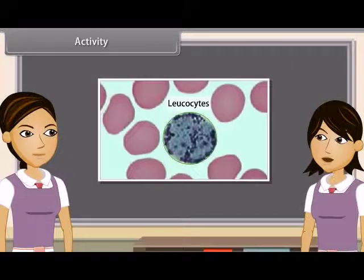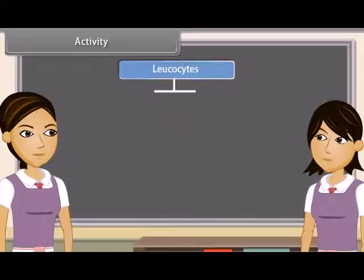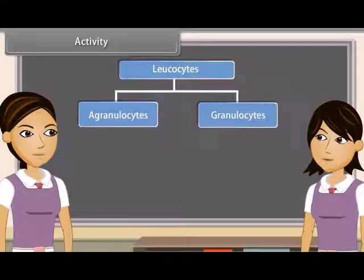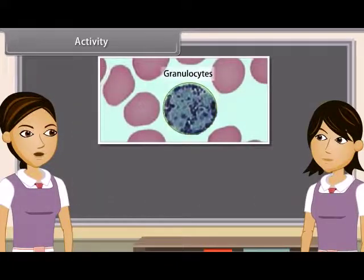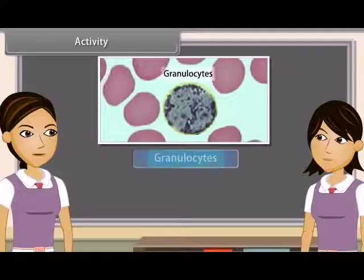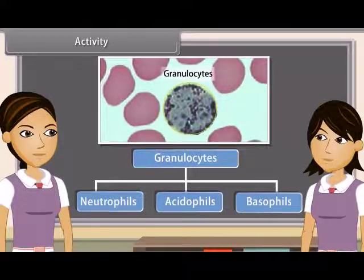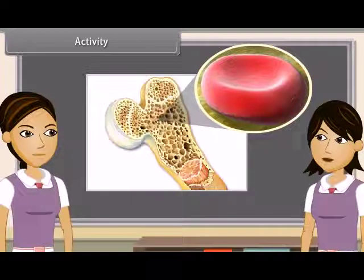Leukocytes are amoeboid, nucleated, and whitish; they are larger in size but fewer in number. They are of two types: agranulocytes, without granules and with non-lobed nucleus — these are monocytes and lymphocytes; and granulocytes, containing cytoplasmic granules and lobed nucleus — they are of three types: neutrophils, acidophils, and basophils. Blood platelets are minute, anucleated, fragile fragments of giant bone marrow cells called megakaryocytes.